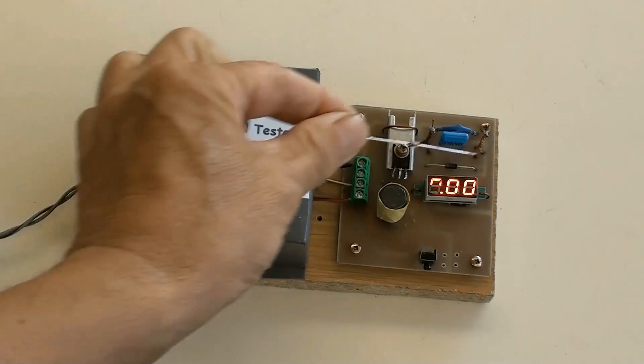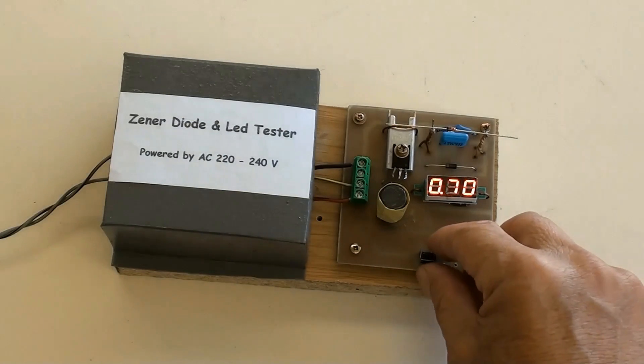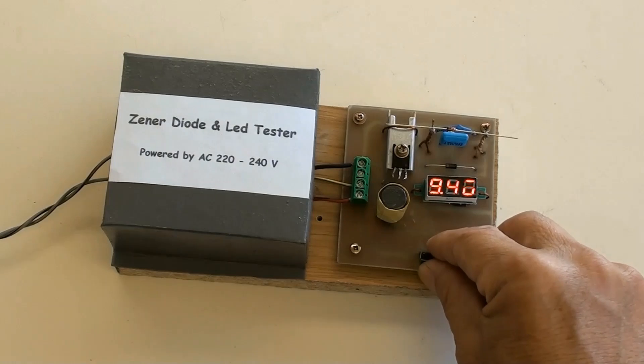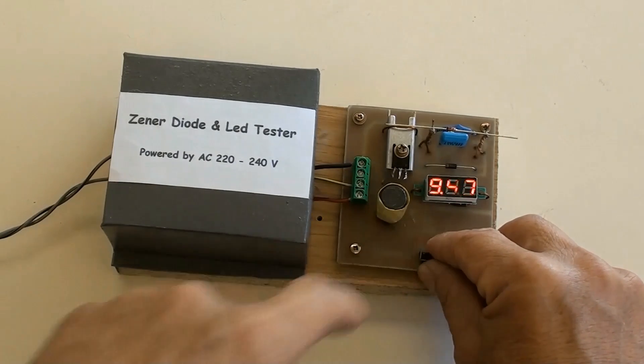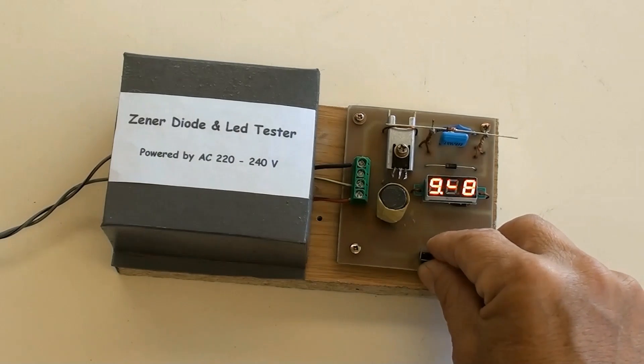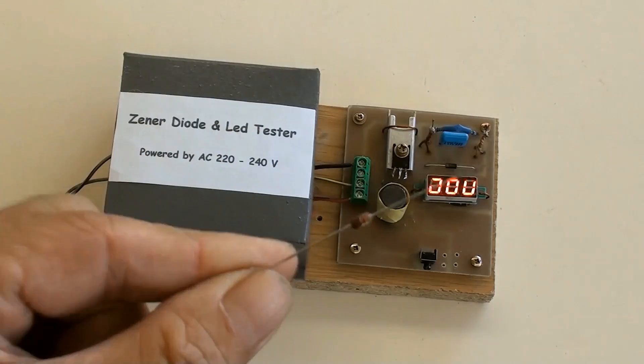Testing the one here. The procedure as previously. The mini meter showed a voltage value of 9.49 volt. So this is 10 volt Zener diode.